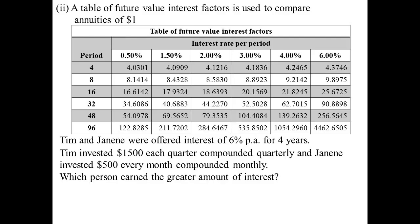Okay. Well, sometimes they give us a table of values rather than having to calculate this out each time. We can just read off the table. So Tim and Janene are offered interest of 6% for four years. Tim's investing $1,500 each quarter, compounded quarterly. Whereas Janene, she decides, no, no, I'm going to do $500 every month, compounded monthly. So who's going to get the most interest? So 6% per annum for Tim is 1.5% per quarter. So the value I'm looking for is there, 17.9324. 1.5% and it would be 16 quarters. Times that by the $1,500 because that table of values is for $1.